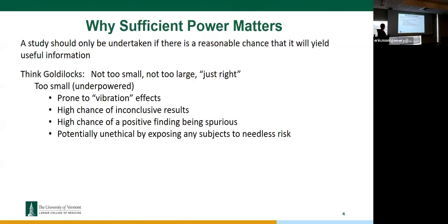If you have a study that's too small and underpowered, it's going to be very prone to vibration effects — things like choice of statistical tests, whether you do a parametric or non-parametric test, which could make a very large difference in your results. Cleaning your data for outliers could make a huge difference with a very small sample size. Also, there's a high chance you won't find anything because you're underpowered, so your probability of finding a significant result is diminished.